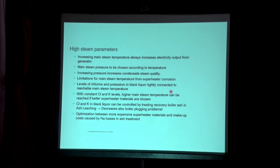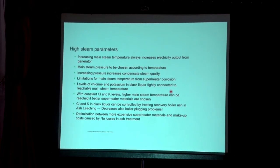For high steam parameters, we operate at more than 90 bar, and up to 110 bar, with temperatures from 480°C and above — 490, 500, or 515°C — depending on the turbine supplier requirements. This increases electricity output. However, a key limitation is superheater corrosion risk at high temperatures due to high chlorine content in the black liquor ash. Chlorine and potassium levels in the black liquor must be carefully controlled when operating at high pressure and temperature.